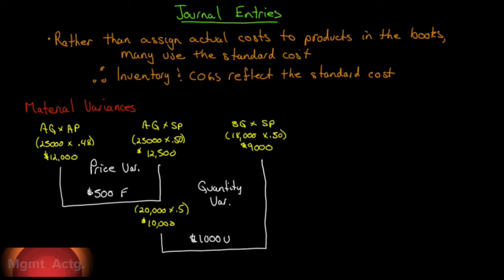Now that we have a good understanding of what standard costing is, it's time to look at what's the outcome of all of this. Is standard costing like activity-based costing — a nice little management tool, a system we run in parallel with another costing system? The answer is not really, no. Standard costing can stand on its own as a costing system. Companies, rather than assigning actual costs to products in the books and journal entries, will use the standard costs so that the inventory and the cost of goods sold will reflect a standard cost.